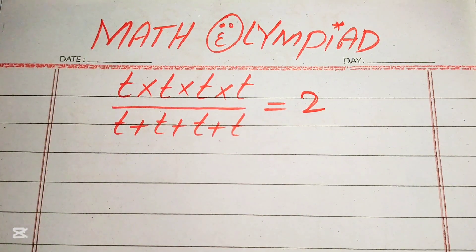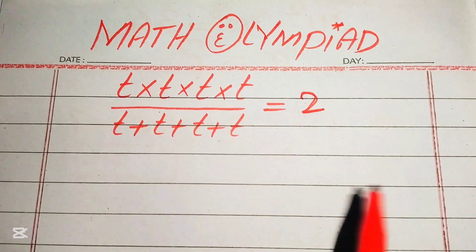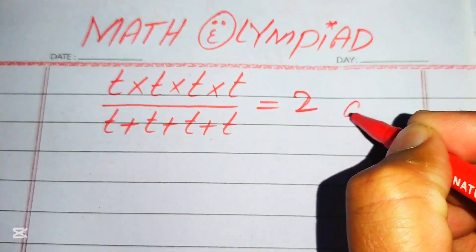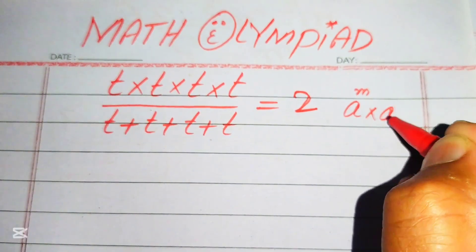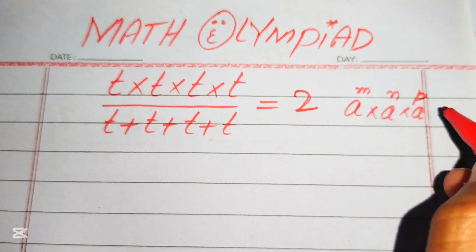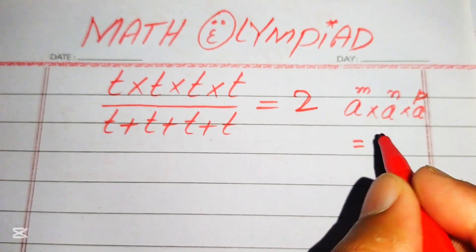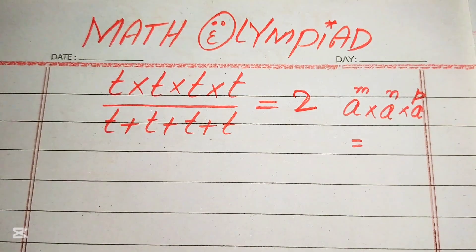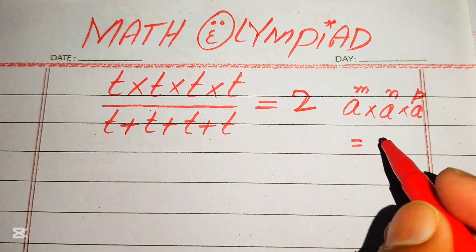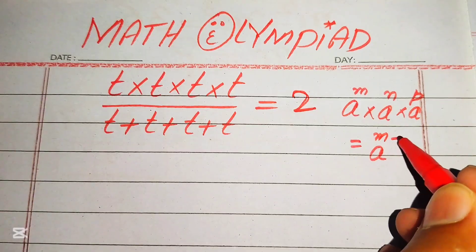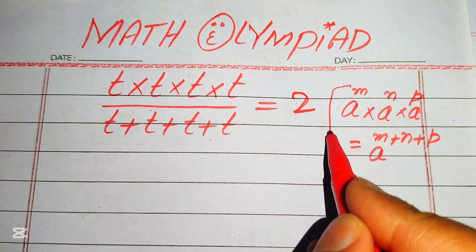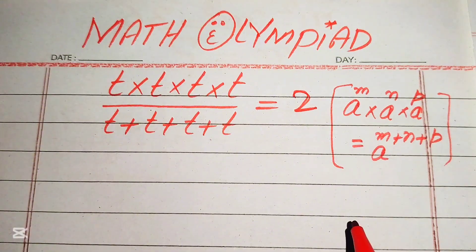First we will apply the exponent law in the numerator. You know that if you have a to the power of m, multiplied by a to the power of n, multiplied by a to the power of p — if the bases of all these numbers are the same, we can add their exponents. It will be written as a to the power of m plus n plus p.